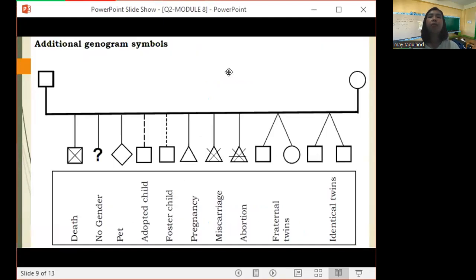Let's proceed with this one. A square with a cross mark or an X mark at the center for death, then a question mark for no gender, then a diamond for pet, and adopted child for a square with dotted lines. For a foster child, a square with small dotted lines. Then for pregnancy, there is a triangle. Then for miscarriage, a triangle with a cross mark inside the triangle. For abortion, a triangle with a cross mark and a horizontal line at the center.